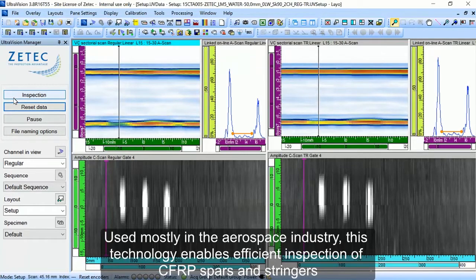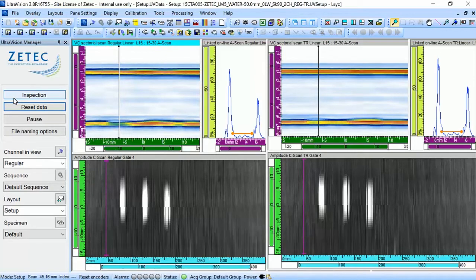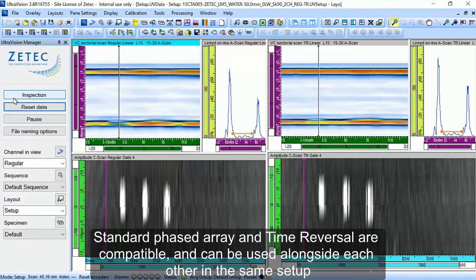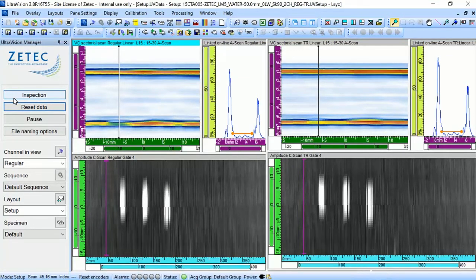Used mostly in the aerospace industry, this technology enables efficient inspection of CFRP spars and stingers. Standard phased array and time reversal are compatible and can be used alongside each other in the same setup.